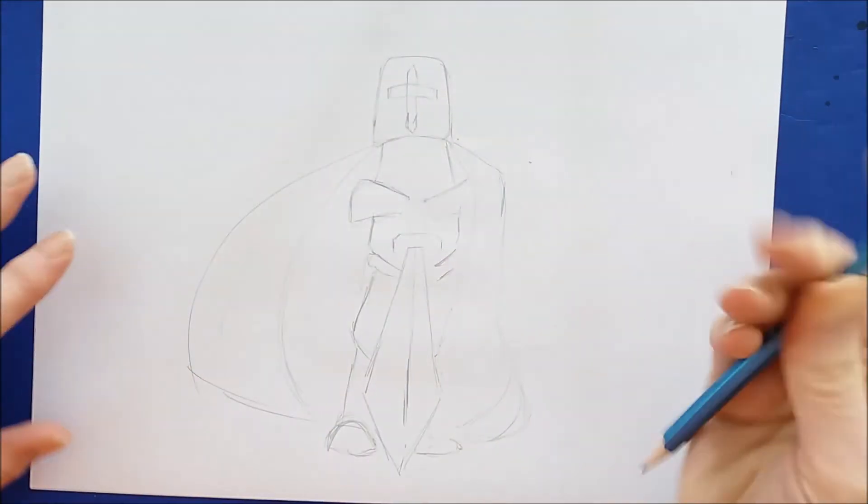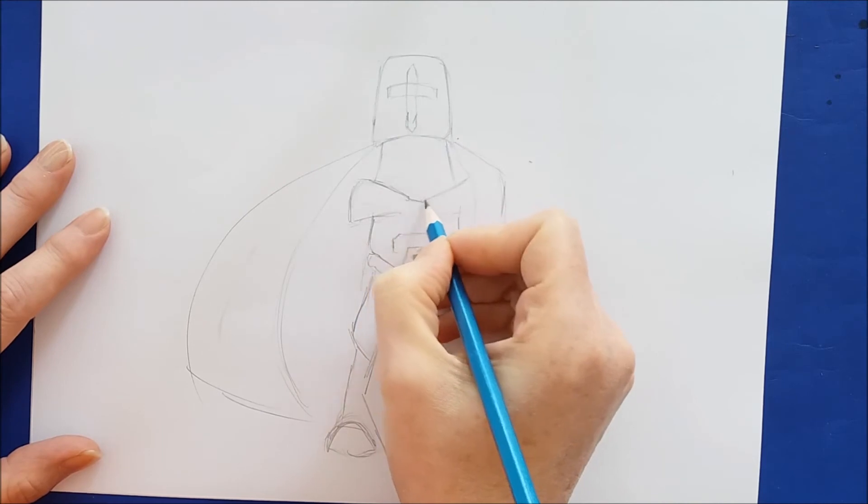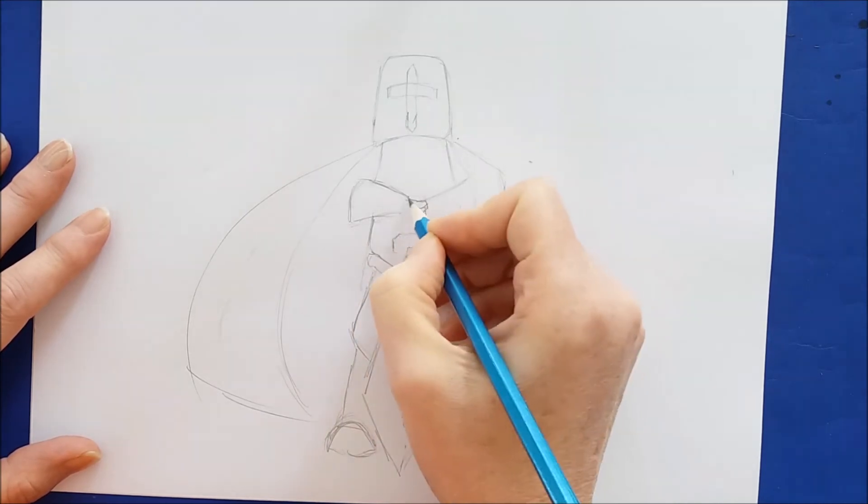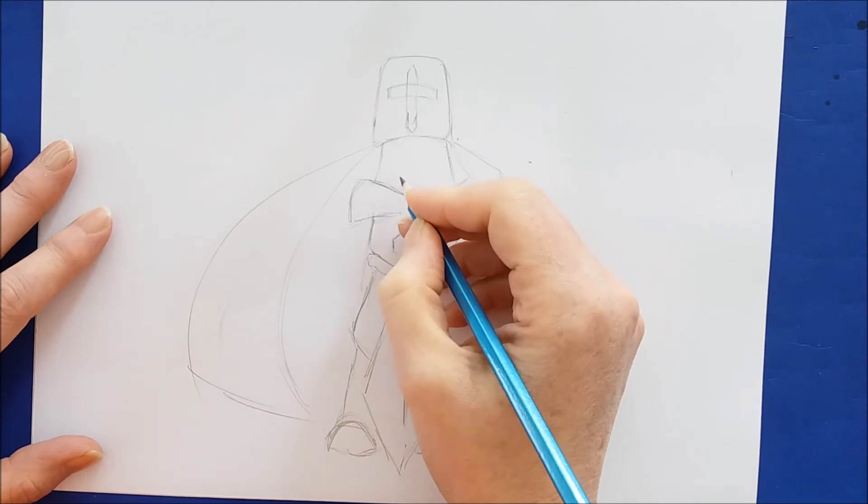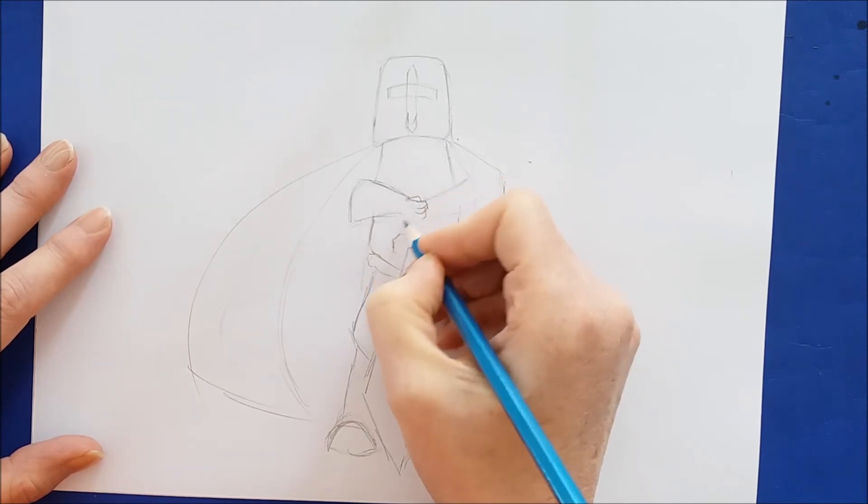So here we have the general shape of our knight. I'll complete the glove by adding the fingers here, which are just a few rounded lines.